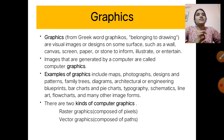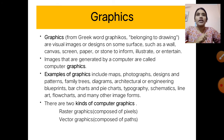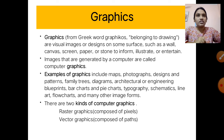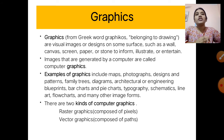Images that are generated by a computer are called computer graphics — that means drawings which are drawn using a computer. Some examples of computer graphics are maps, photographs, designs and patterns, family trees, diagrams, architectural and engineering drawings, blueprints, bar charts, pie charts, typography, schematics, line art, flowcharts, and many other image forms.